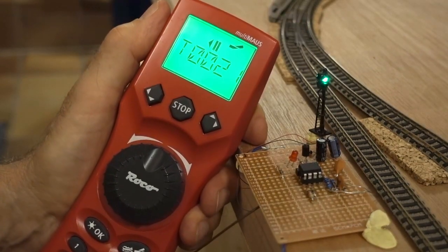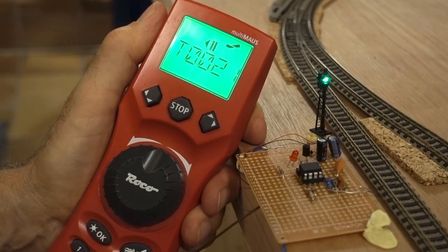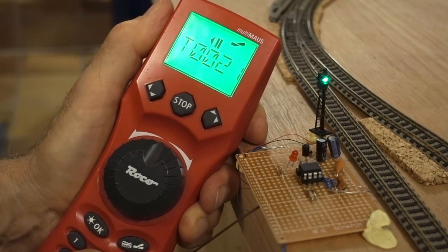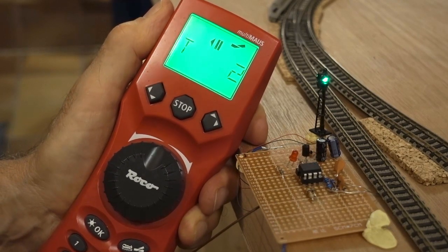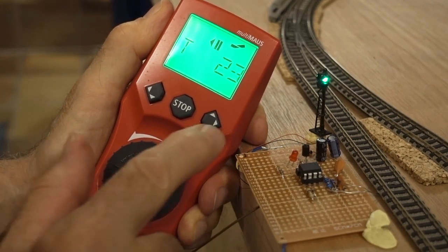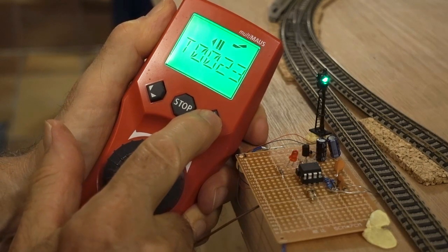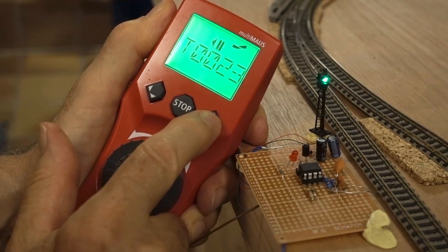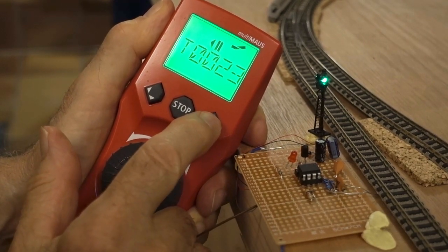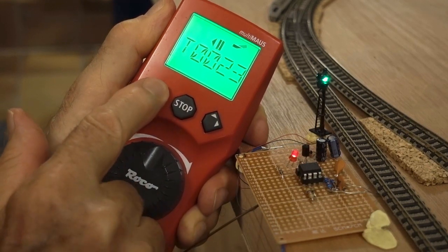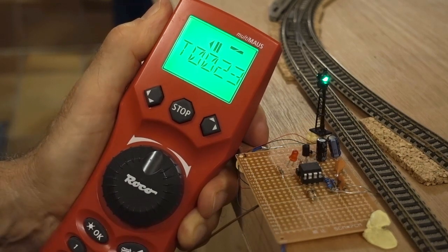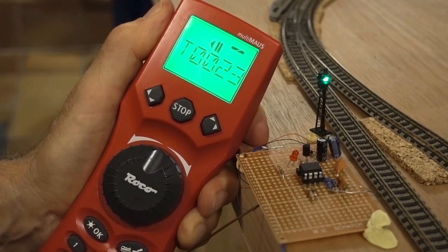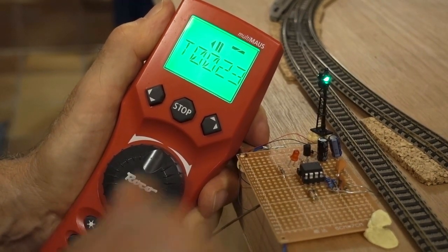Now I'm going to demonstrate how the timings can be set using DCC commands. So to change the time for the green to red transition, I set address 23. And every time I push this button, the delay increases by half a second. And when I press the other button, the delay decreases by half a second. I'm going to reduce it to the minimum, half a second.